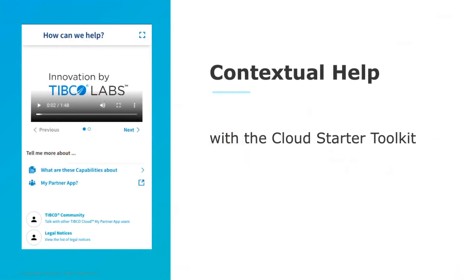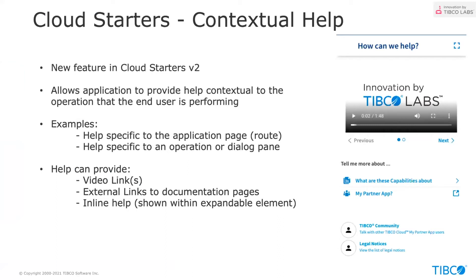The focus today is on the contextual help feature added in version two. The intention is that once you've got an application, you can make it much easier for your users by adding a contextual help bar purely through configuration — much like the one you can see on the left hand side of the screen. The help displayed will be contextual to what your user is actually doing. You can provide help specific to the application page they're working on — in Angular terms, that's a route — so on a cases page you'd show cases information, on a document page you'd show document operations info.